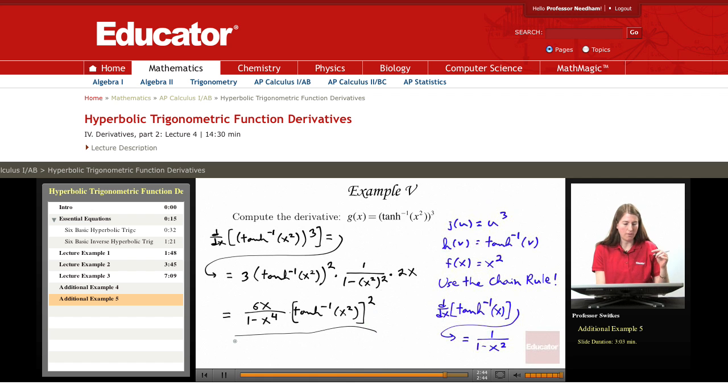So again, the outer structure was u cubed, we got three times the quantity squared, times derivative of the quantity. And differentiating that inverse hyperbolic tangent of x squared gave us the one over one minus x squared squared, times 2x. And so that completes this example.